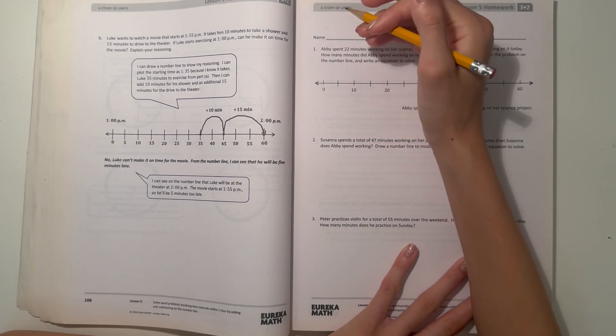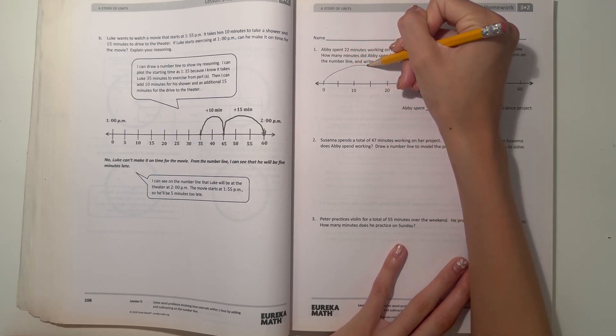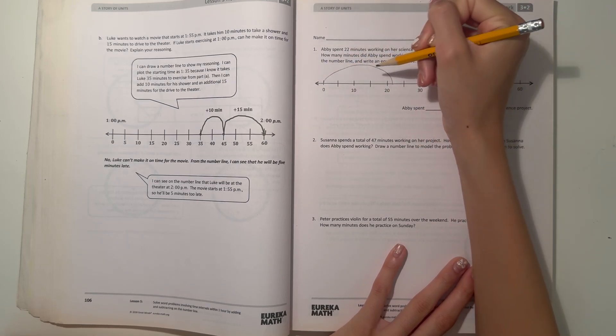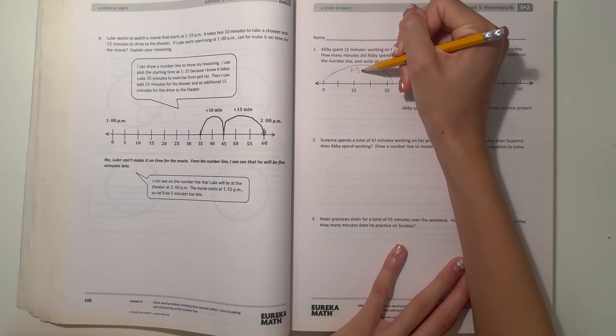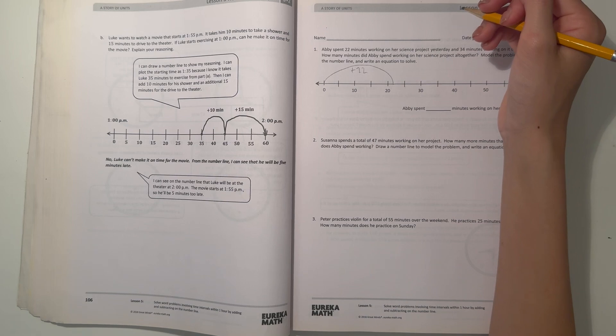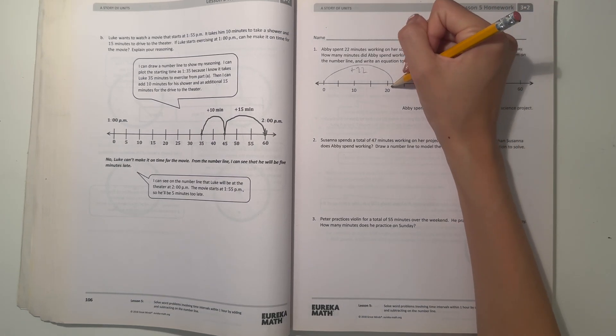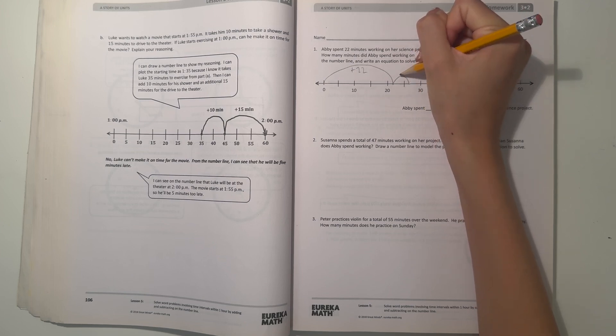Let's start from zero. So let's go to 22. So we get 20, 21, 22. So there, that'd be like plus 22. And then she spent 34 minutes working on it. I'm gonna add four first.